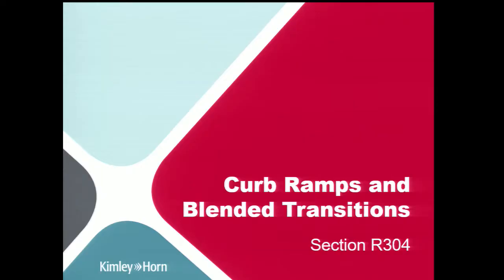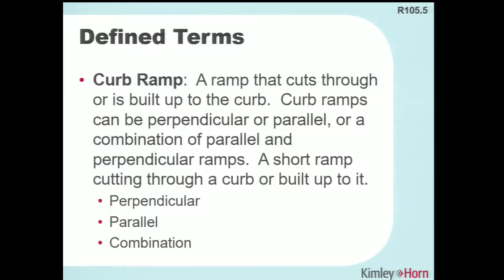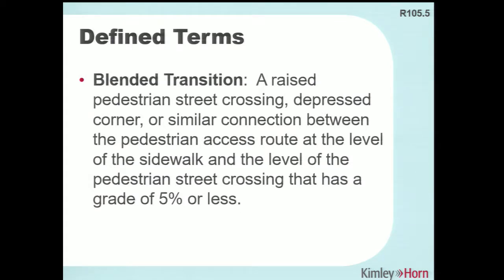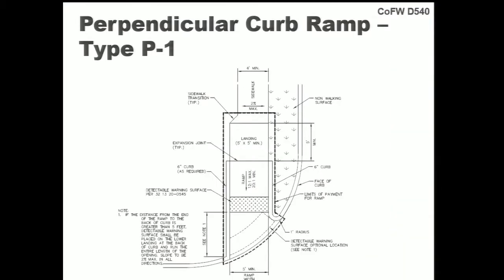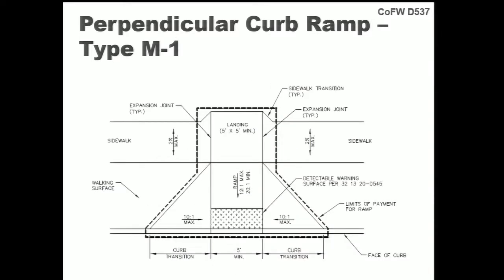Curb ramps and blended transitions: there are basically three types — perpendicular curb ramps, parallel curb ramps, and combinations. Blended transitions have the entire corner turned down with slightly different slope requirements. Perpendicular curb ramps have the turning space at the top of the curb ramp; parallel curb ramps have two ramps coming down with the turning space at the bottom. The City of Fort Worth has good design details showing various curb ramp types and applications — reference good design standards where they're available.